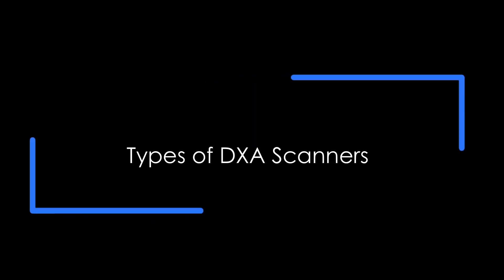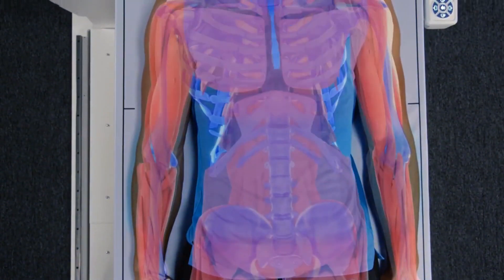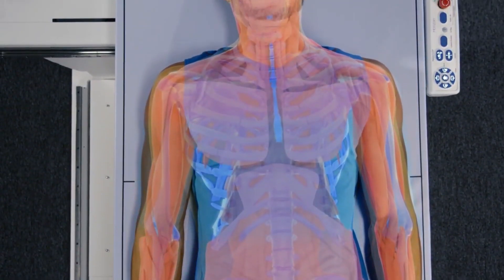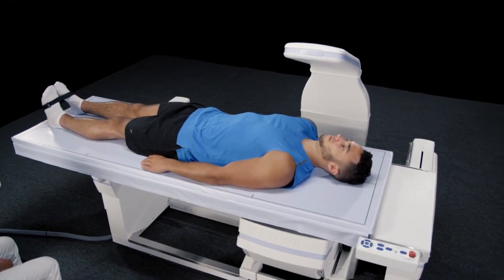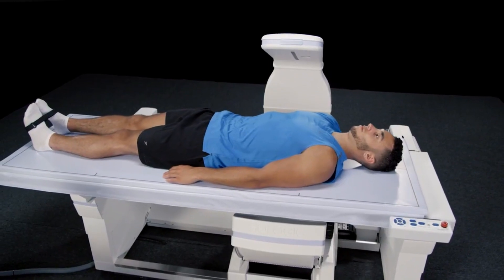Let's look into types of DXA scanners. There are two types of DXA equipment, a central device and a peripheral device. Most of the devices used for DXA are central devices, which are used to measure bone density in the hip and spine. They are usually located in hospitals' radiology departments.